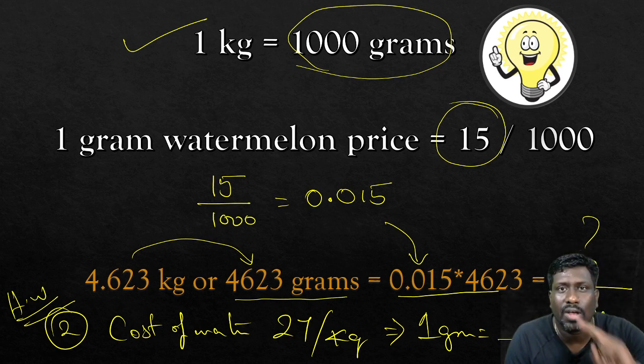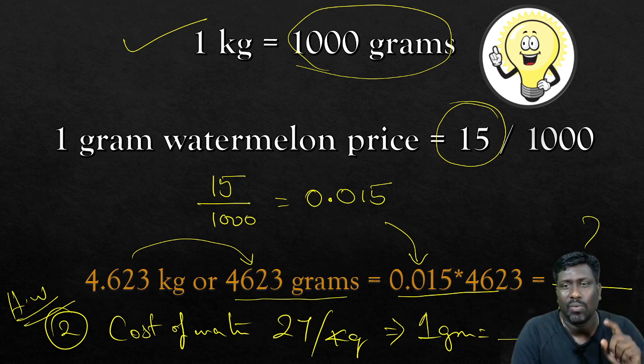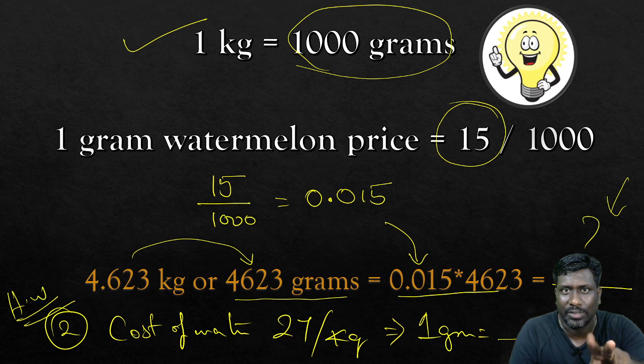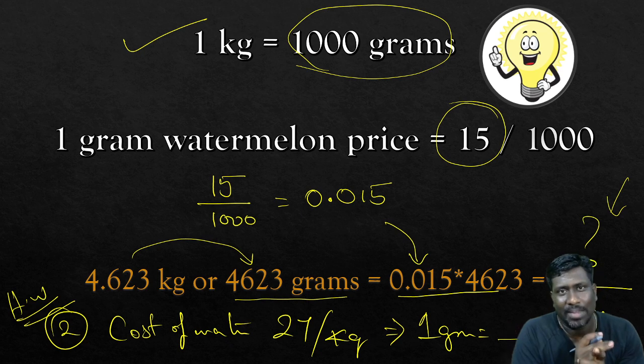I am expecting two answers from you. One is the solution of the problem using your calculator and one new problem - the watermelon cost is 27 per kg. How much for 1 gram? Just use your mobile phone and give me the solution in the comment box.